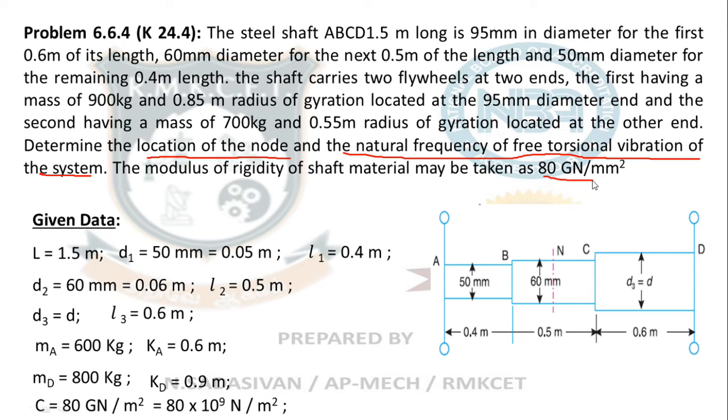To find the location of the node, we first need to solve for the unknown diameter D3. Only then can we find the remaining quantities.